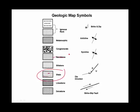And conglomerate looks like conglomerate. And metamorphic is all nice and wavy. So what I want you to get out of this is this symbol right here, the strike and dip.